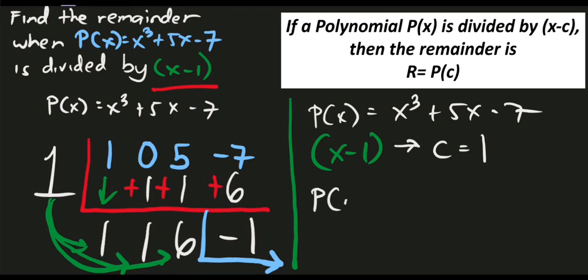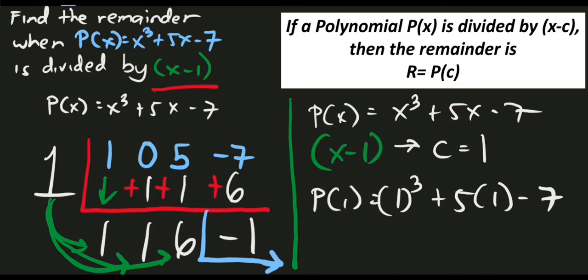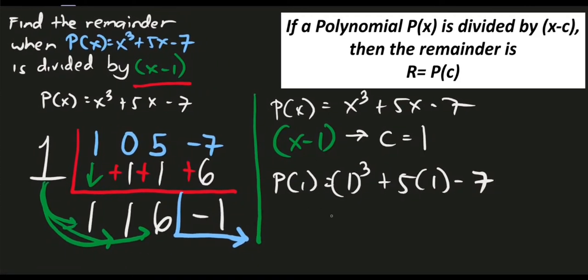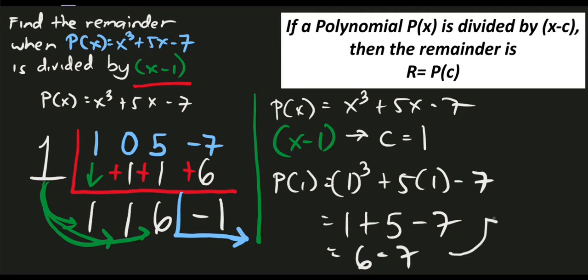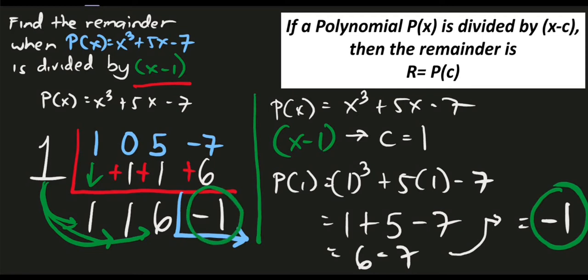Evaluating P of 1: replace x with 1 to get 1 cubed plus 5 times 1 minus 7. Simplifying: 1 plus 5 minus 7 equals 6 minus 7 equals negative 1. So the remainder by remainder theorem is also negative 1, confirming our synthetic division result. Both methods give the same answer.